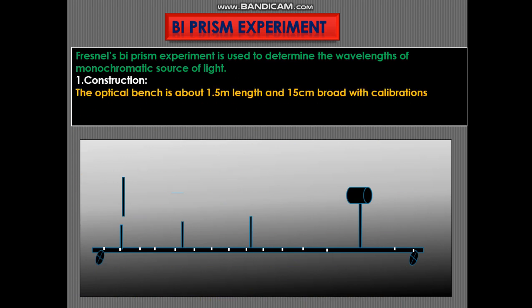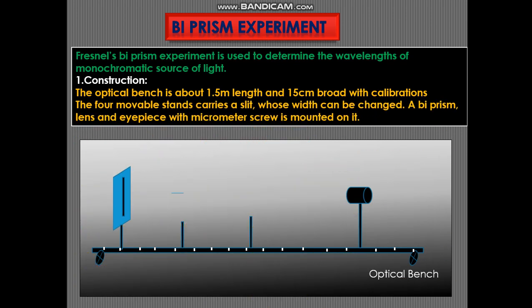Now let's see the construction. The optical bench is about 1.5 meter length and 15 cm broad with calibrations. The four movable stand carries a slit whose width can be changed, a biprism and an eyepiece with a micrometer mounted on it. The convex lens is added later on.